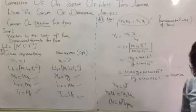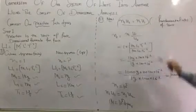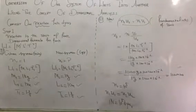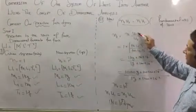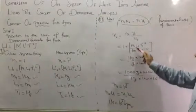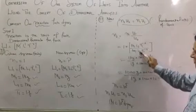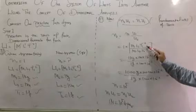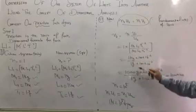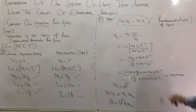Now n2 u2 equal to n1 u1. This is the fundamental equation of unit. So n2 we have to find—n1 u1 upon u2. So M1 L1 T1 minus 2 over M2 L2 T2 minus 2. Put up the value: m1 is 1 kilogram, l1 is 1 meter, t1 is 1 second minus 2; m2 is 1 gram, l2 is 1 centimeter, t2 is 1 second minus 2.